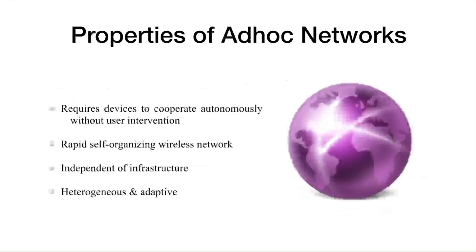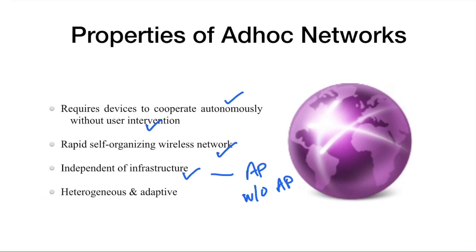Properties of ad hoc networks: they require devices to cooperate autonomously without any user intervention. They are rapid self-organizing wireless networks — meaning if there is a failure in a particular node, they automatically form an alternative path. They are independent of infrastructure, with two modes: with access point and without access point. They are heterogeneous — each node could be of different manufacturer, energy levels, or medium access control — yet they can still communicate. They are also adaptive to networking behavior.